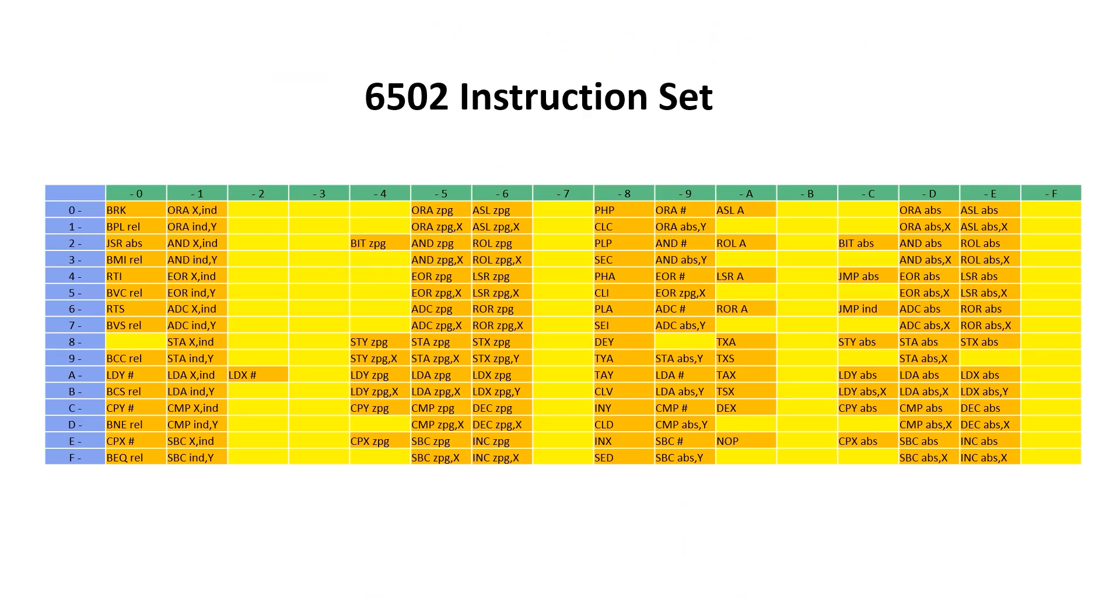There are only two instructions that actually make adjustments for binary coded decimal. These are add with carry and subtract with carry. And there are two instructions for setting and clearing the decimal bit. We need to handle binary coded decimal differently for addition and subtraction. I'm going to go ahead and look at subtraction first, because it's actually a bit easier.